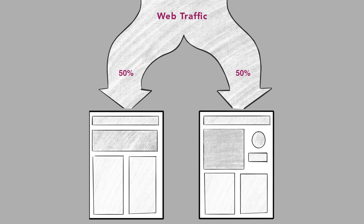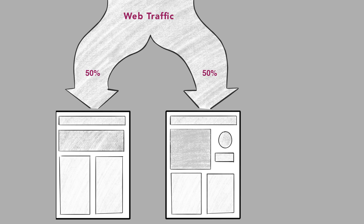For example, with A-B testing, you might compare two different landing pages. Each landing page might have different images, content, and call-to-action text. Let's say you split your traffic between these two versions and find that version B results in more conversions than version A. That tells you version B works better, but you may not really know why. Was it the image in version B? The content? The call-to-action text? Or some combination of those variables?